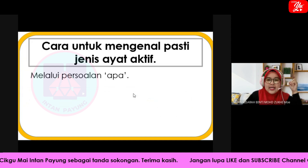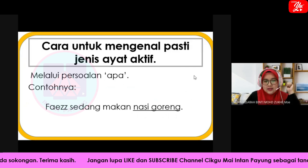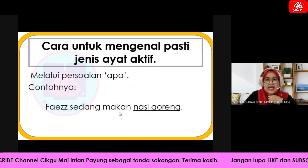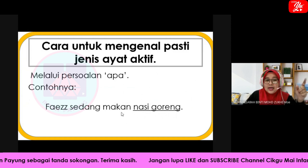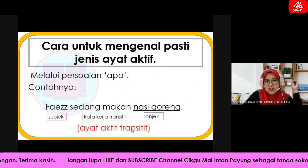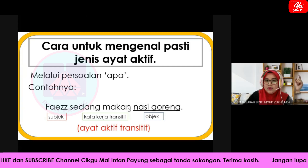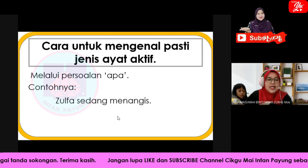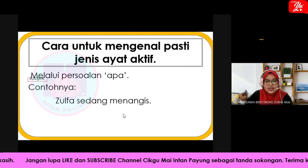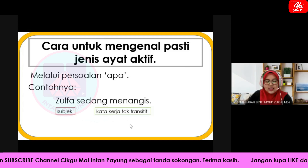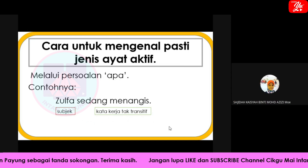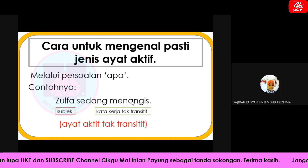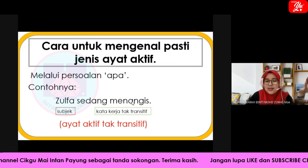Cara untuk mengenalpasti jenis ayat aktif — kadang-kadang kita keliru, transitif ke tak transitif? Melalui persoalan 'apa?'. Contohnya 'Faiz sedang makan nasi goreng' — tengok perkataan 'makan'. Tanya diri awak: 'Faiz sedang makan, makan apa?' Kalau awak boleh jawab, itu ialah ayat aktif transitif. Kalau tak ada 'nasi goreng', masih boleh jawab 'makan apa?' — makan ayam goreng, makan pizza, dan sebagainya. Tapi 'Zulfa sedang menangis' — 'menangis apa?' tak payah jawapan, sebab kita dah faham maksud menangis. Itu ialah ayat aktif tak transitif.